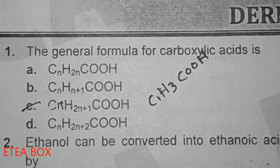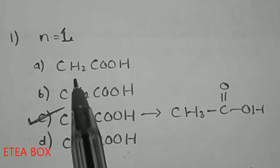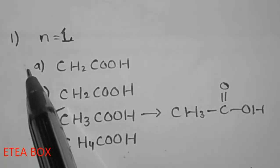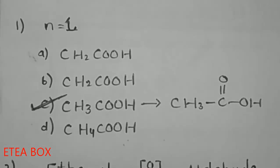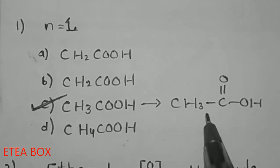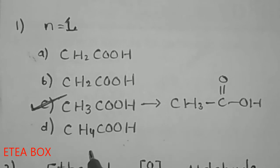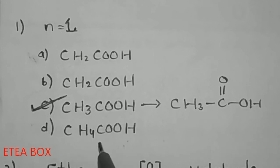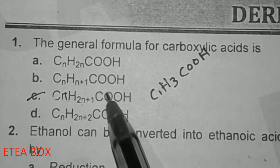Assalamu alaikum students, today we will solve the MCQs of carboxylic acid and its derivatives. The first MCQ is: what is the general formula for carboxylic acid? If we put n=1 in option A, we get CH₂C=OH, which is incorrect. Option B also gives CH₂C=OH where carbon valency is not satisfied. Option C gives CH₃C=OH, which is acetic acid — all carbon valencies are satisfied. Option D gives CH₄C=OH, which is also incorrect. So option C is correct: CₙH₂ₙ₊₁C=OH is the general formula for carboxylic acid.